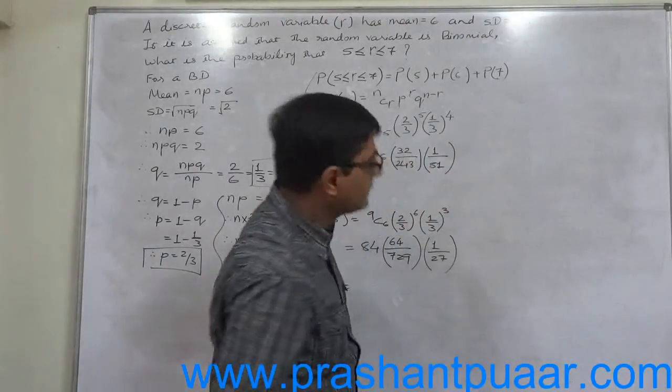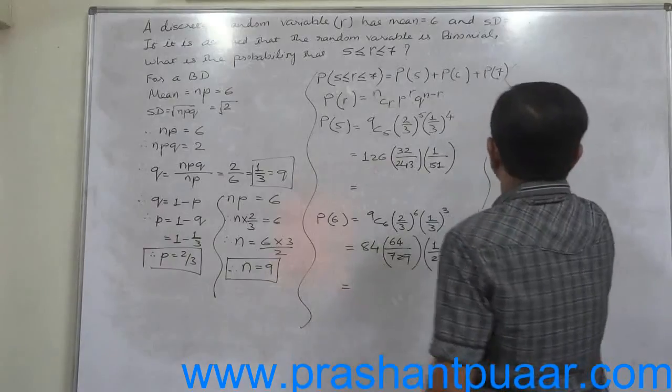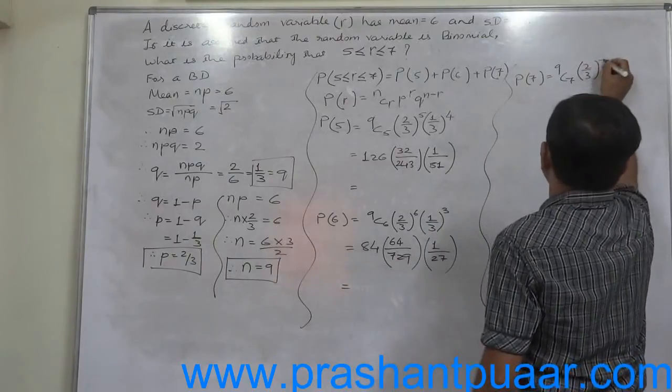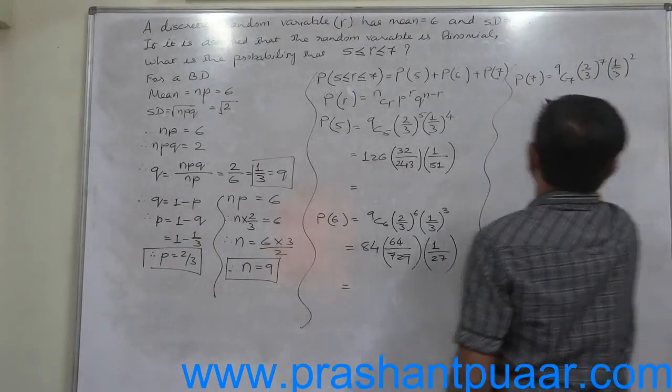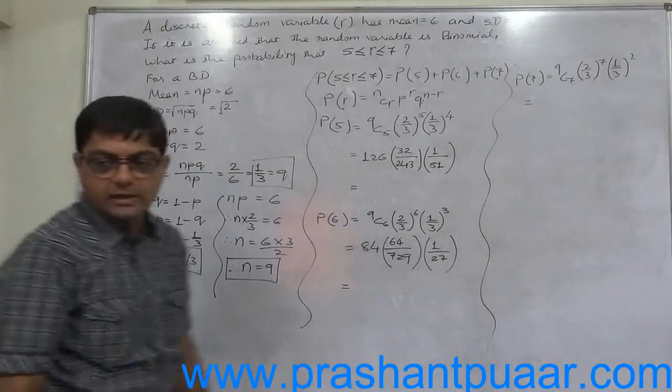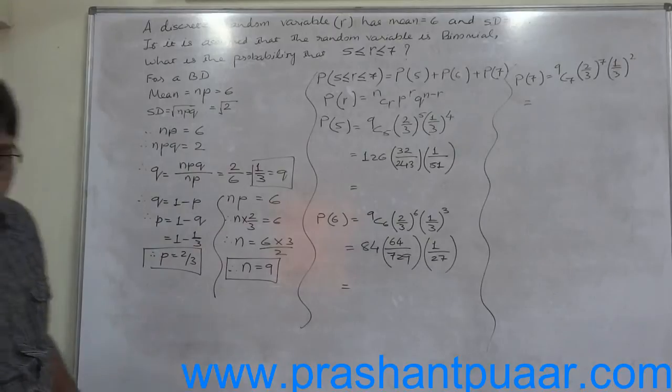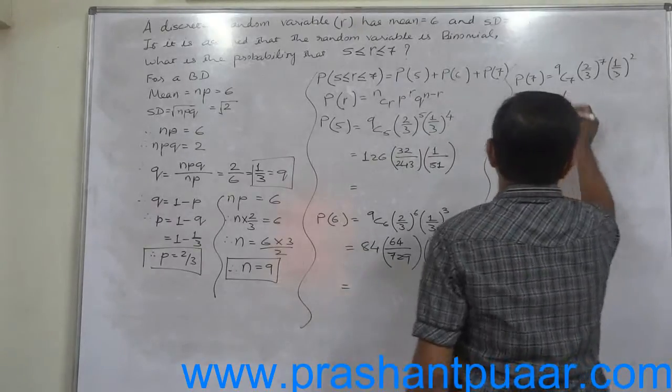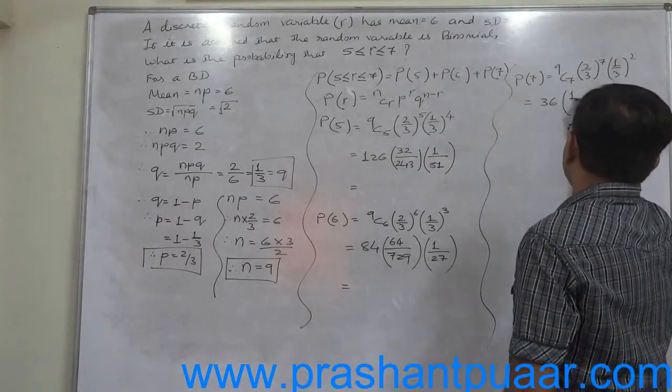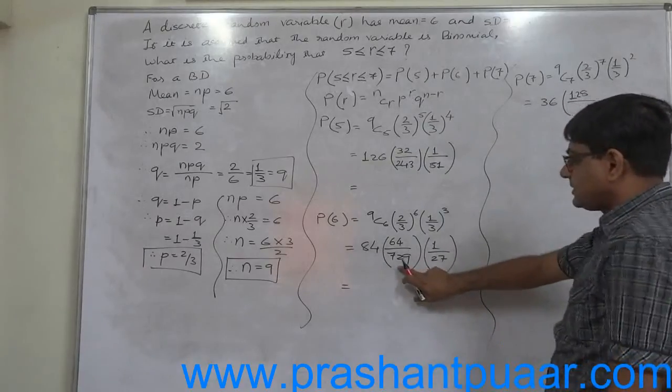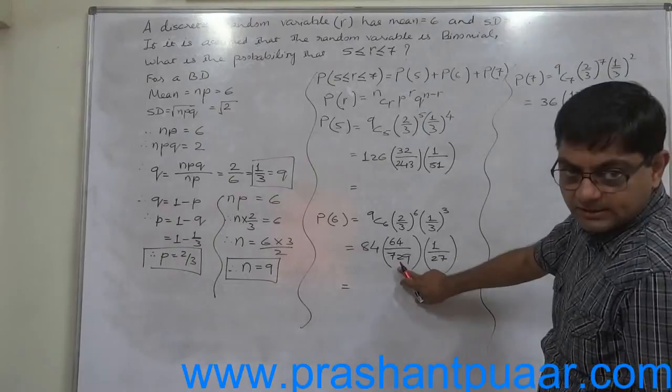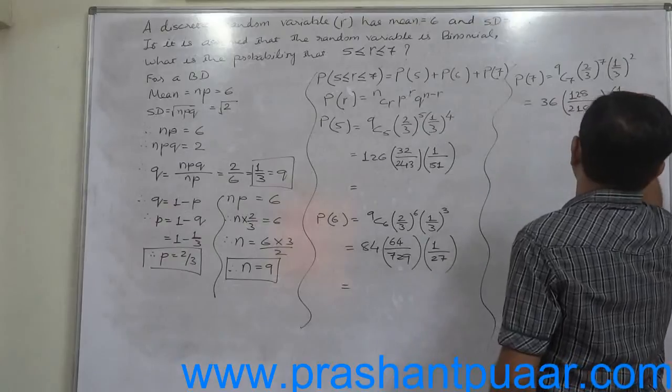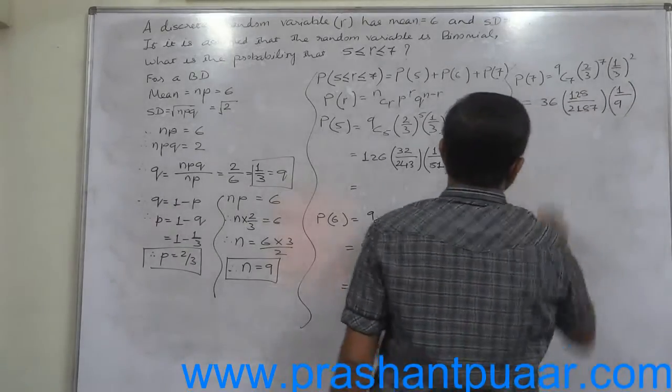And the last is P(7) equals 9C7 times (2/3)^7 times (1/3)^2. Now what is 9C7? 9C7 is always equal to 9C2, and what is 9C2? 9×8 divided by 2, so it is 36. 36 times 2^7 is 128, and 3^7 is 729×3, which is 2187, times (1/3)^2. Again simplify this case.